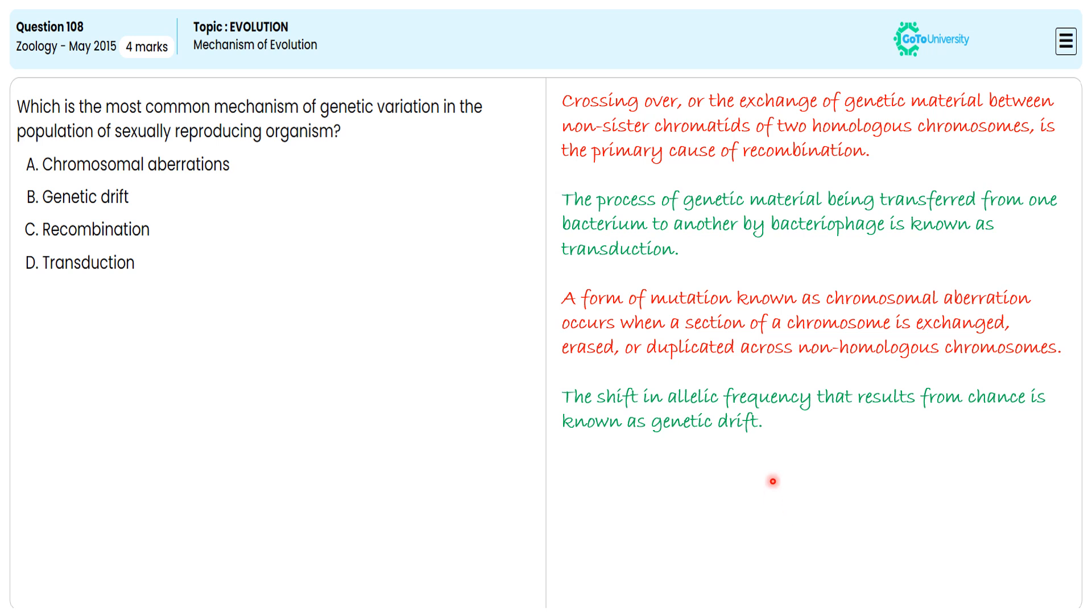Meiosis is exactly responsible for the recombination execution. With the specification, we are choosing option C as the correct answer to secure full marks after ignoring options A, B, and D.